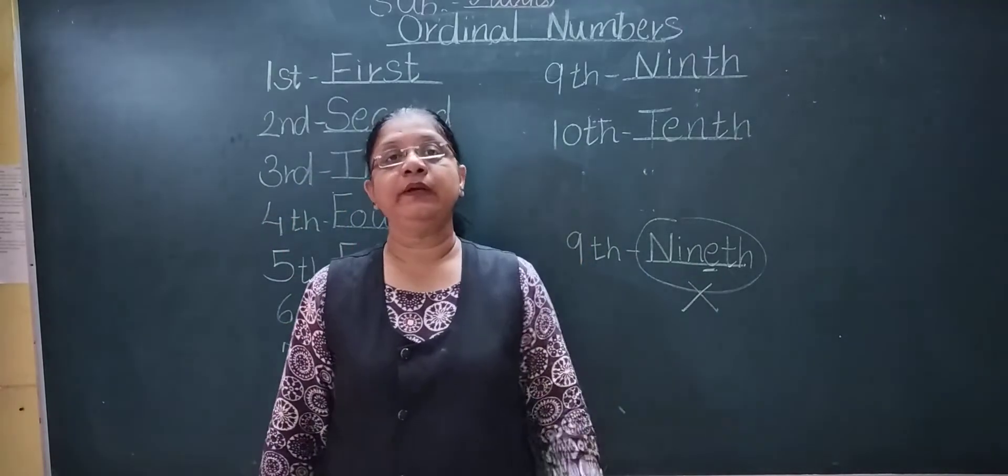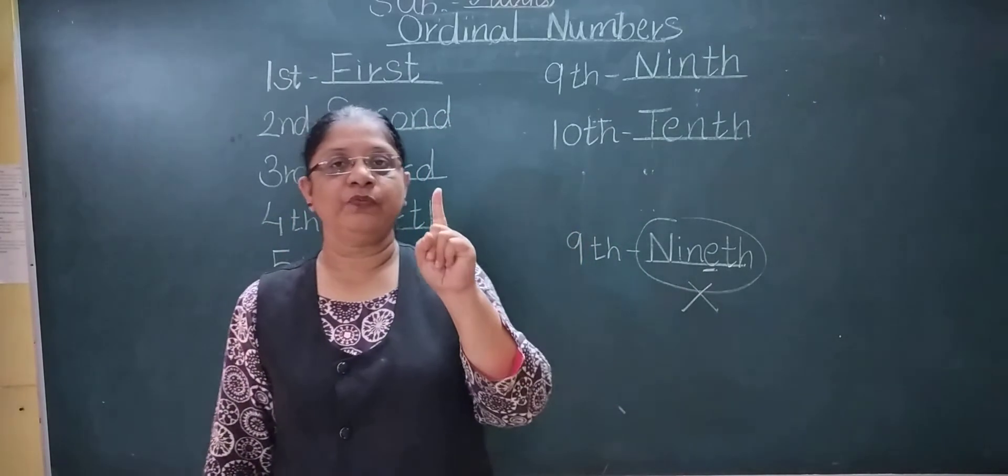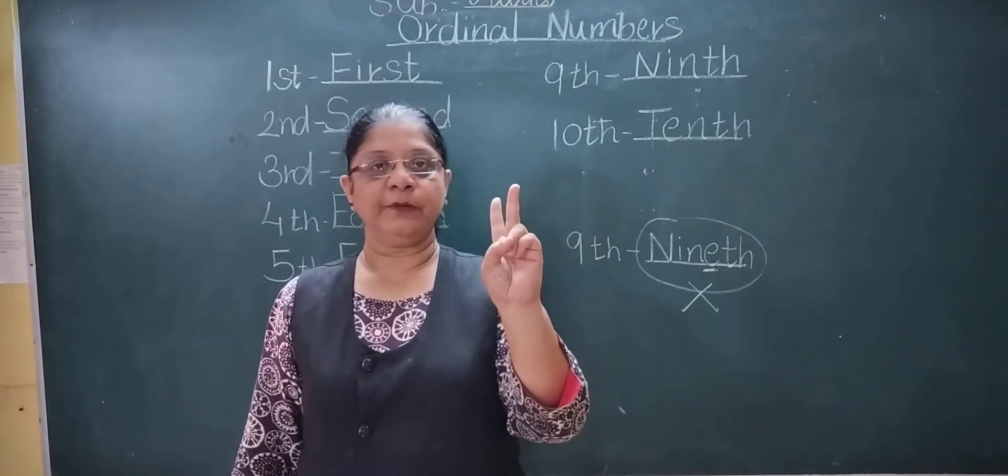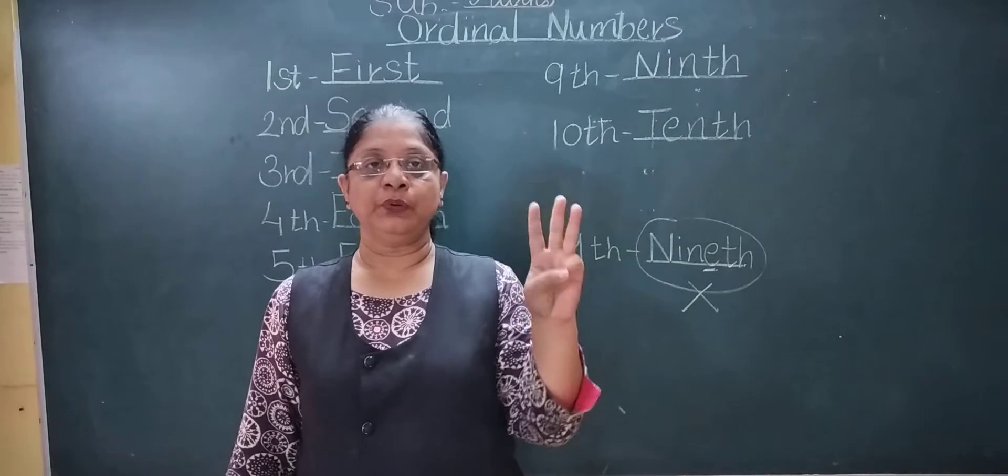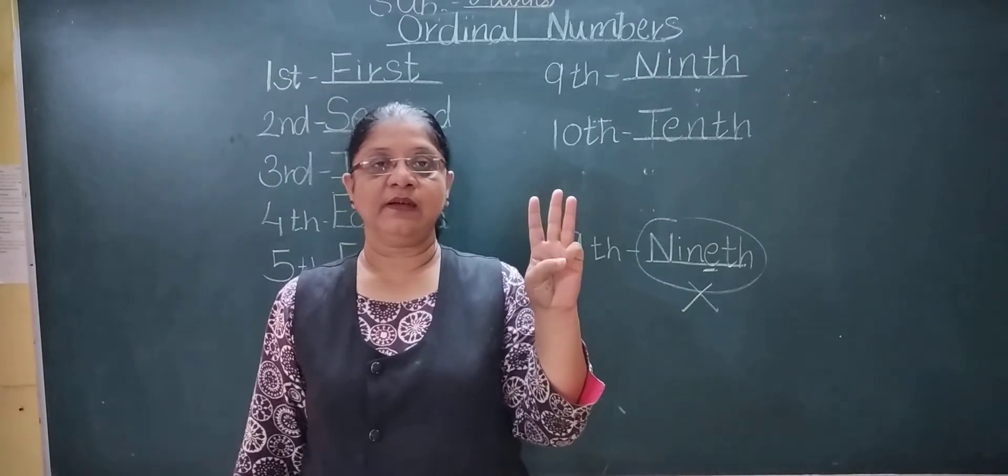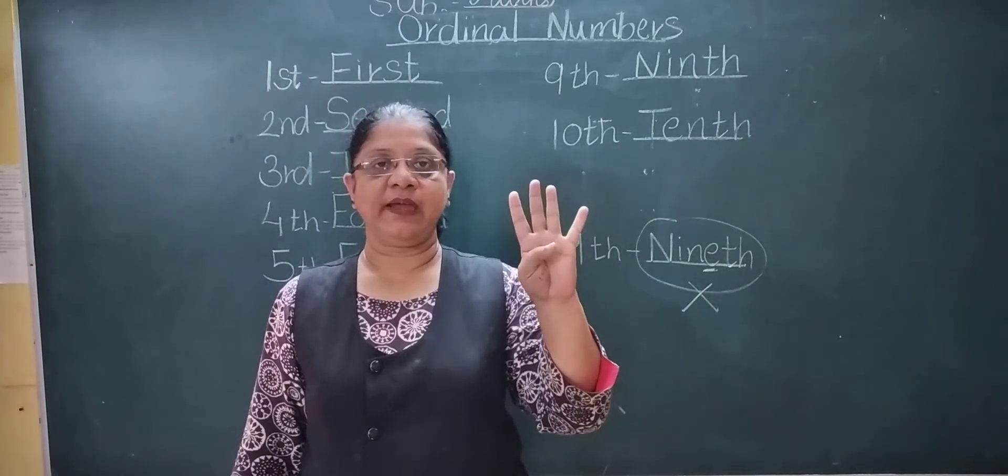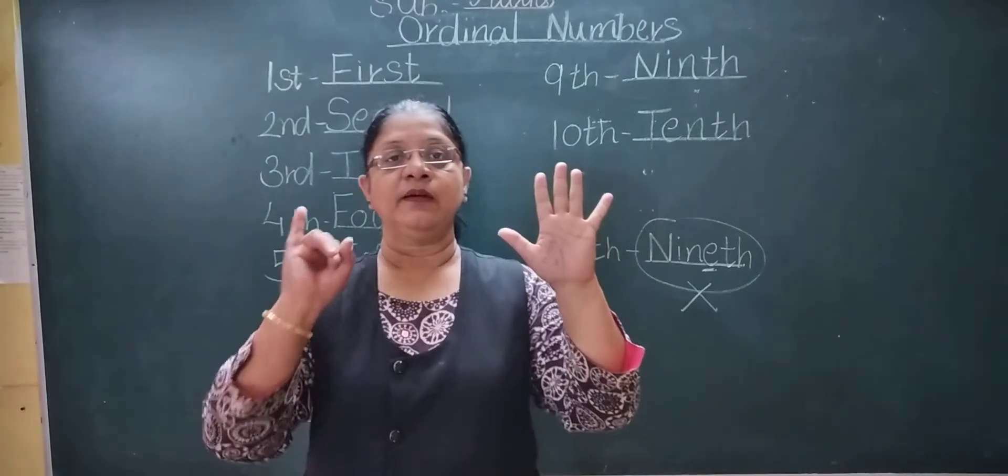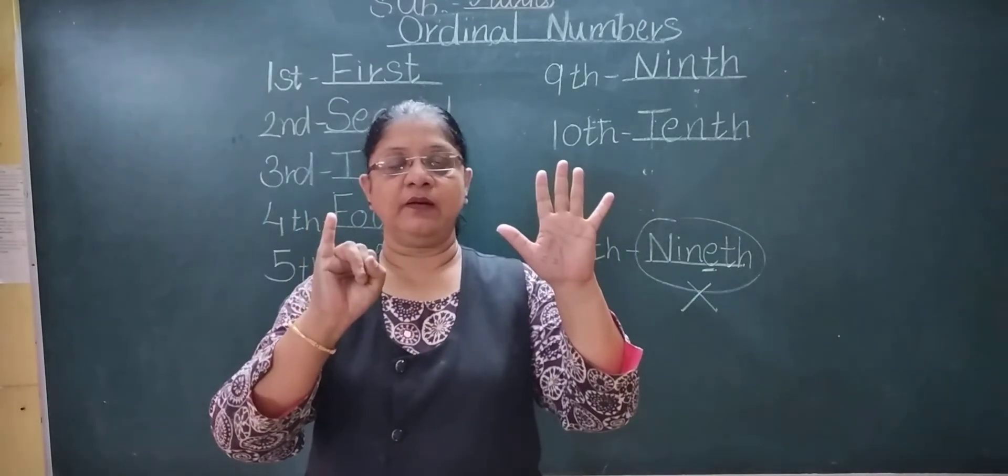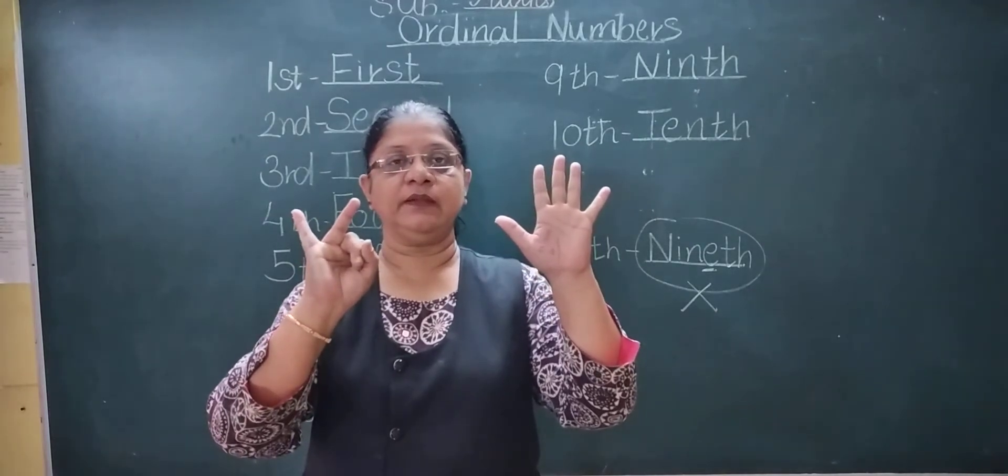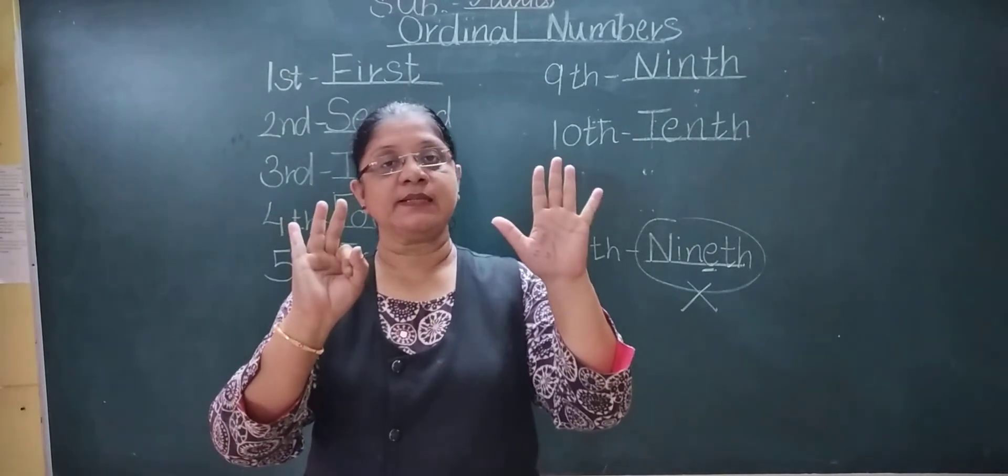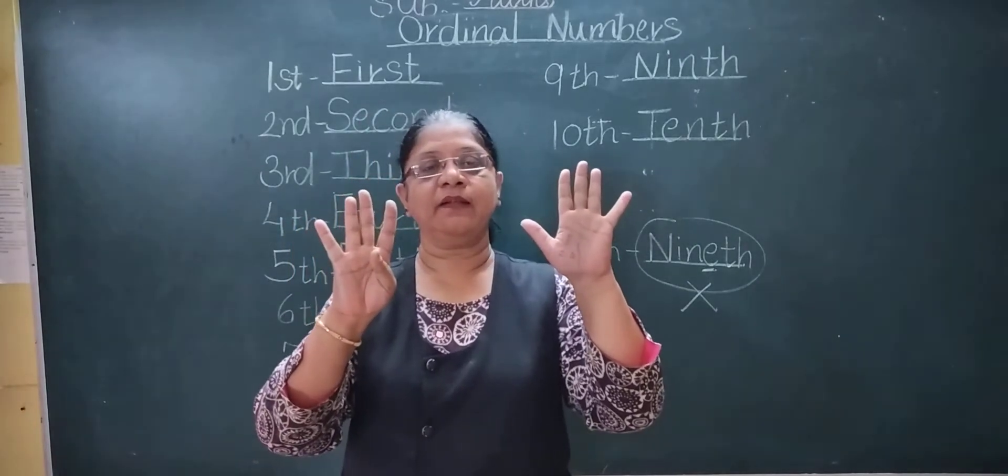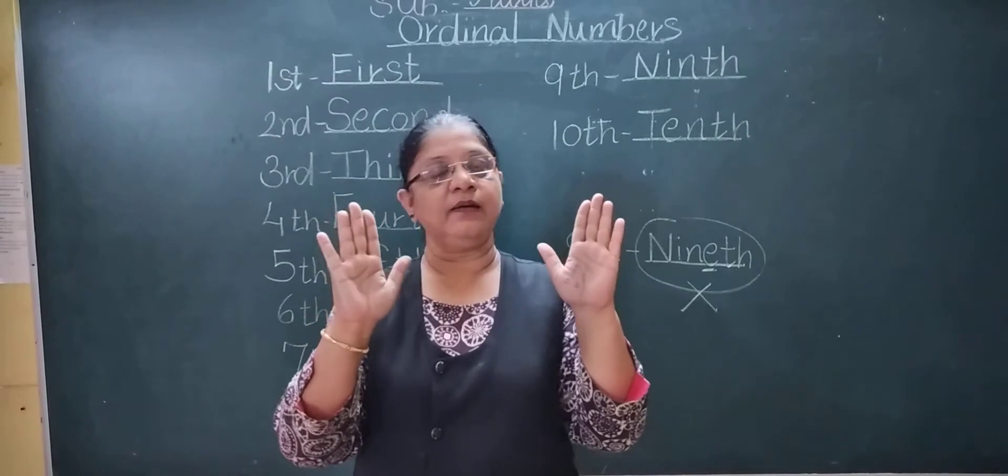Now table of two. Two ones are two, two twos are four, two threes are six, two fours are eight, two fives are ten, two sixes are twelve, two sevens are fourteen, two eights are sixteen, two nines are eighteen, two tens are twenty.